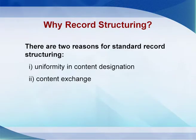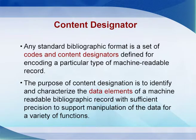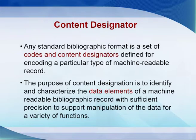Why do we need content designation, or why do we need to follow a content designator? Basically there are two purposes: uniformity in content designation and content exchange. By using a content designator — CCF, UNIMARC, or MARC — you are describing resources uniformly and you are able to export your data to other libraries and import other libraries' data into your catalogue datasets. Any standard bibliographic format like CCF, MARC, and UNIMARC is a set of codes and content designators defined for encoding a particular type of machine-readable record. The purpose of content designation is to identify and characterize the data elements of a machine-readable bibliographic record with sufficient precision to support data manipulation for retrieval purposes.